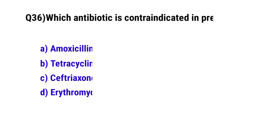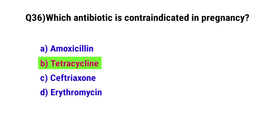Question number thirty-six: Which antibiotic is contraindicated in pregnancy. The correct option is B, tetracycline.